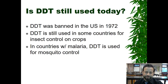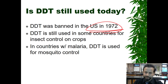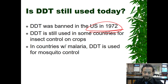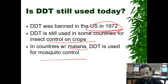Is DDT still used today? Thankfully, not in the U.S. — it was banned in 1972. Think about whether that's a good thing or a bad thing, and what farmers and consumers might think about it. It's still used in some countries to control insects on crops, and in countries with malaria, DDT is actually used for mosquito control, and that's a really big deal.